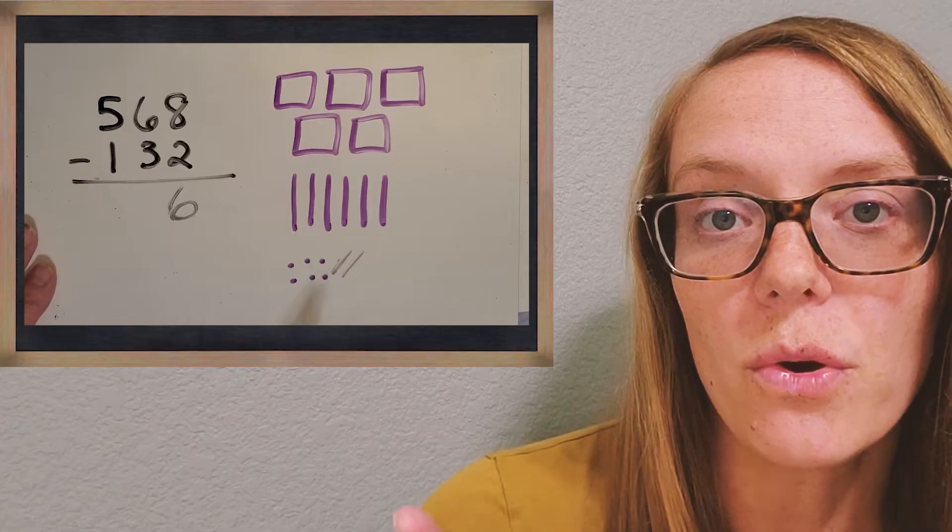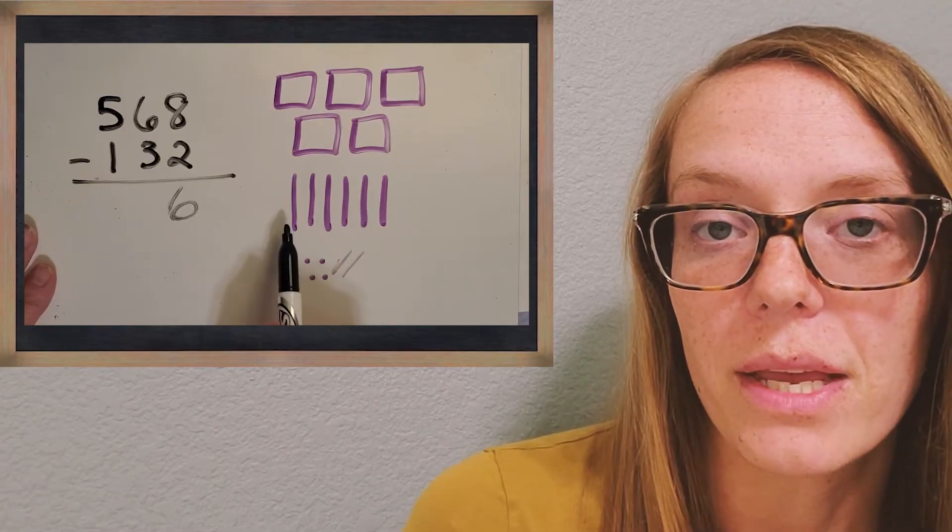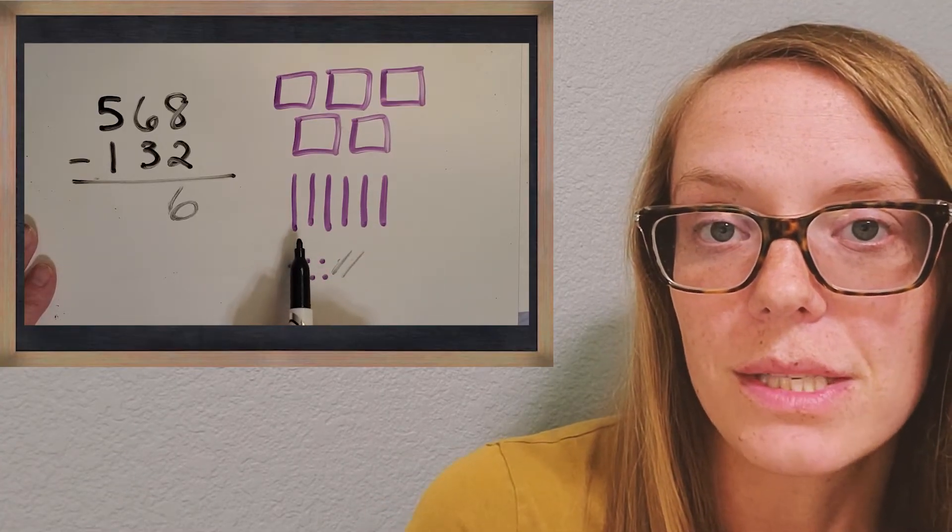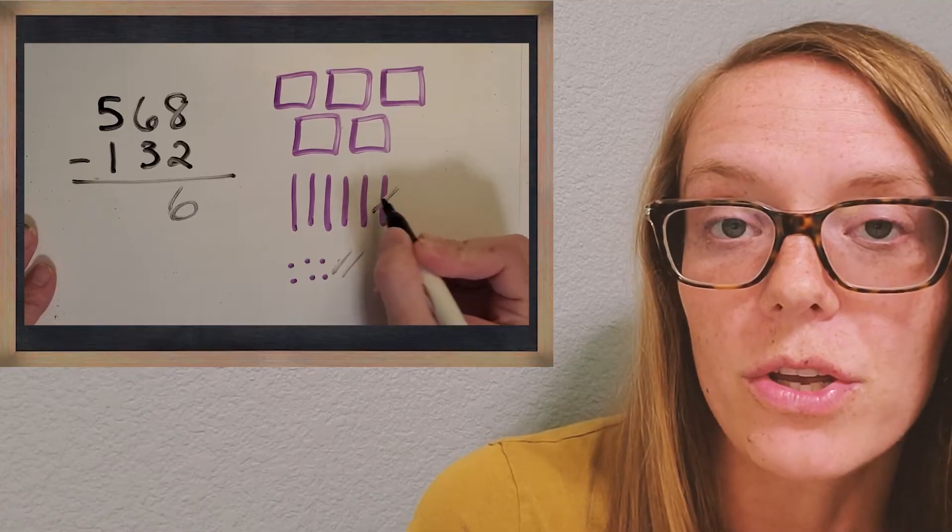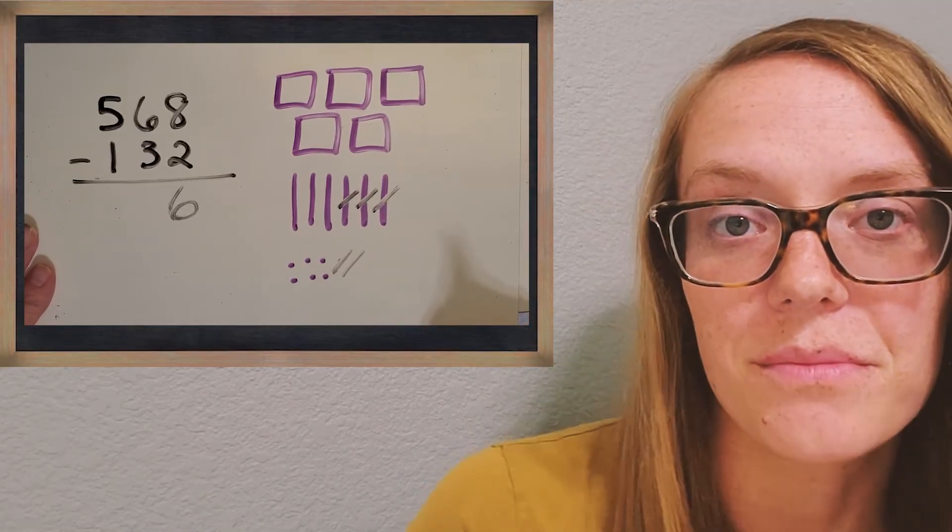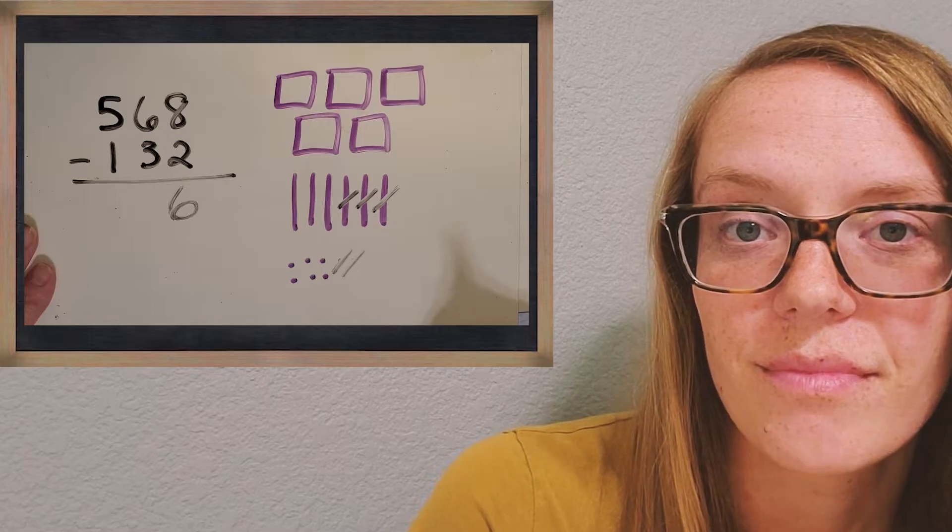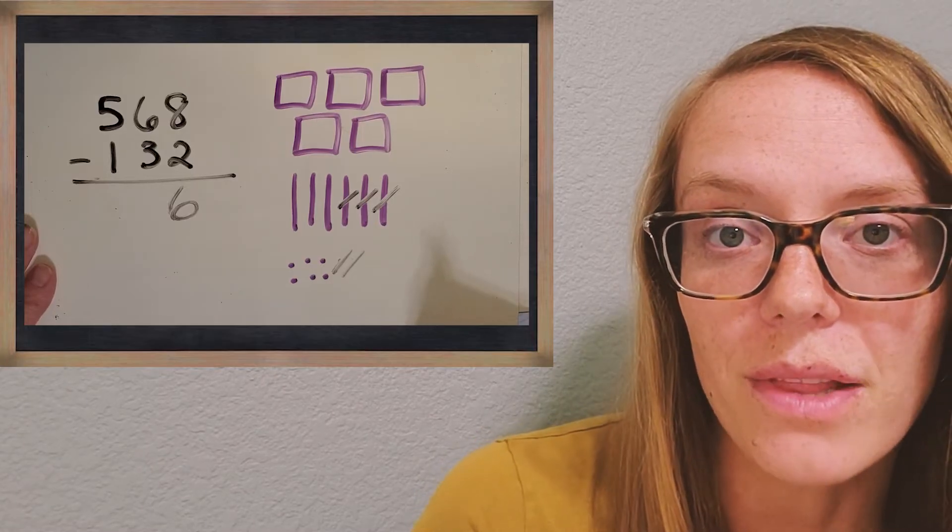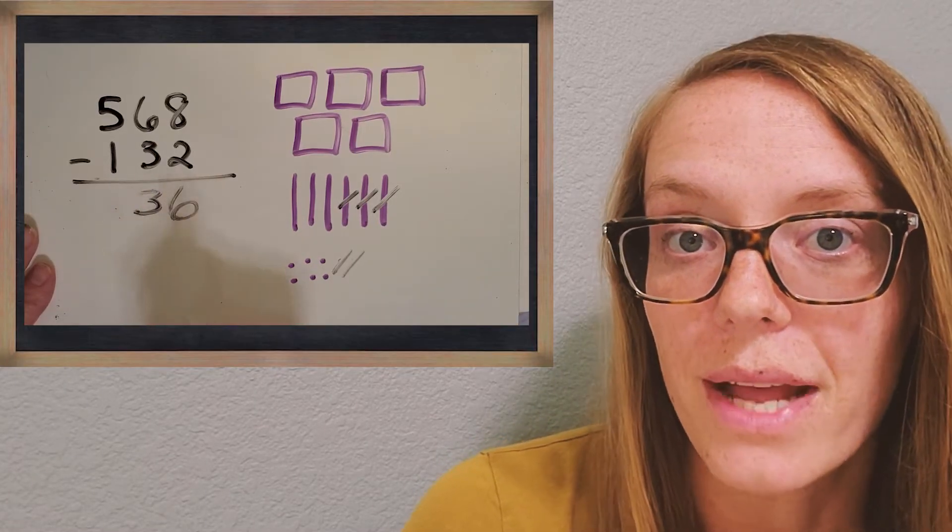Then we just move over to the tens place. So look at those 6 longs, and I want you to take away 3. What do you get? Okay, great, 3 longs are left. So we'll put a 3 in that tens place.